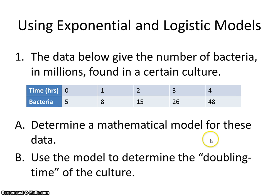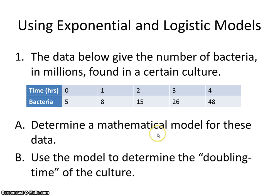So my first example: the data below give the number of bacteria in millions found in a certain culture. We have our time and our bacteria. We're going to determine the mathematical model for these data, and then we'll use the model to determine the doubling time of the culture.